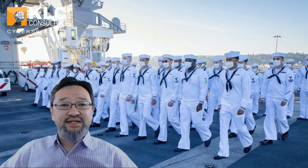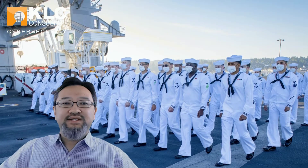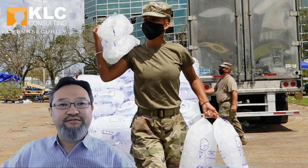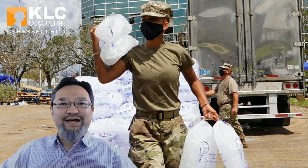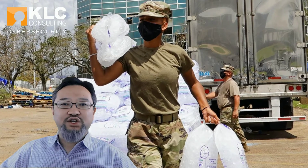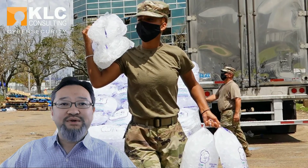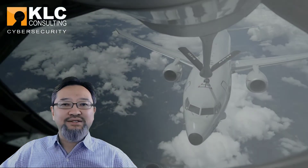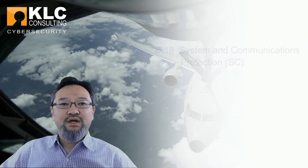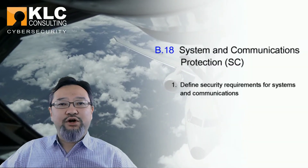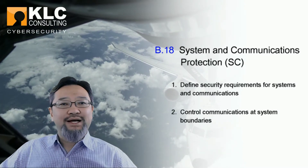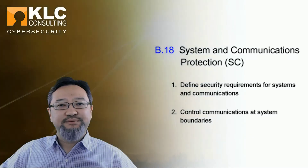Let's take a look at System and Communications Protection. System and Communications Protection activities ensure the organization is actively identifying, managing, and controlling all system and communication channels used to store or transmit CUI. This domain consists of two capabilities: 1. Define security requirements for systems and communications, and 2. Control communications at system boundaries.